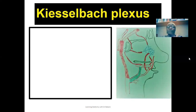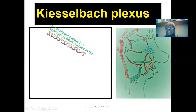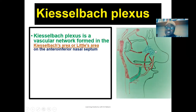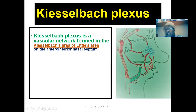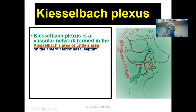These arteries give off septal branches that form anastomoses, referred to as Kiesselbach's plexus. This anastomosis is found at the anterior inferior part of the nasal septum — a vascular network formed in that region. The specific name for this region is the Kiesselbach's area, also referred to as Little's area. This is where the plexus is formed, contributed to by branches of the different arteries that supply the nasal cavity.